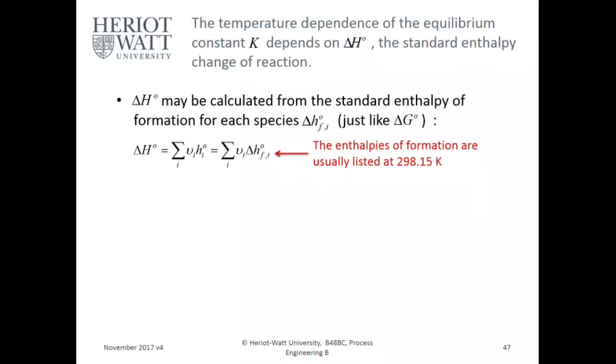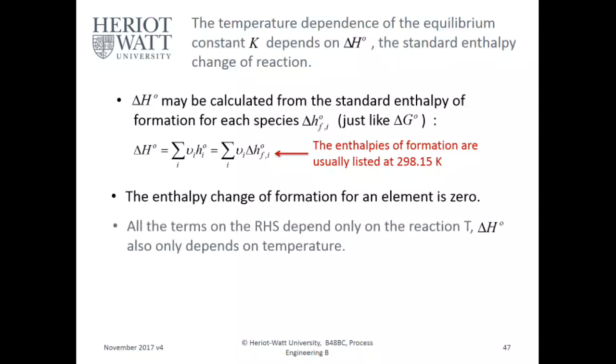The enthalpies of formation are usually listed at 298.15 Kelvin, so you can calculate the ΔH of an entire reaction based on the enthalpy of formation from your steam tables. This is useful. The enthalpy change of formation for an element is zero.